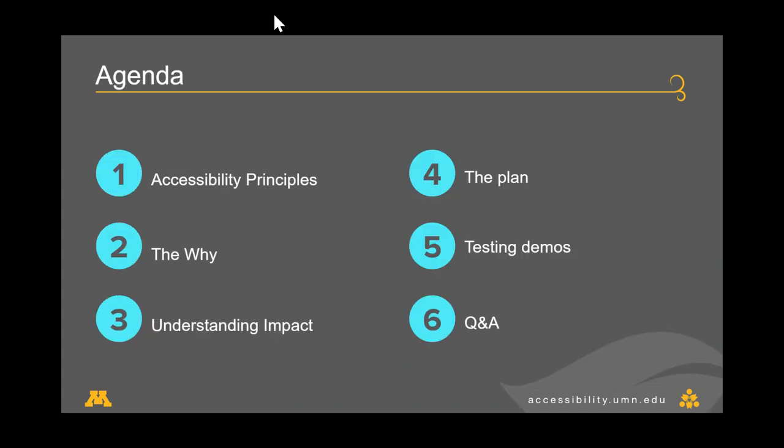Our agenda today: we'll start with a few accessibility principles, talk about why manual accessibility testing is important and how it differs from automated testing, understand the impact it has, talk about a plan for how to approach manual accessibility testing on your websites, go through demos of a few common quick tests you can learn and start doing on your own, and then answer any questions that come up.